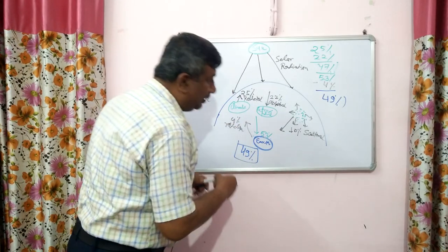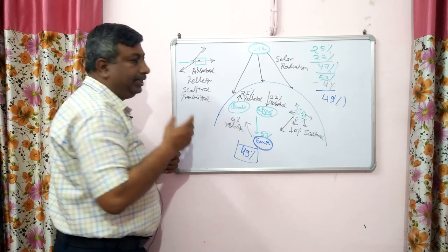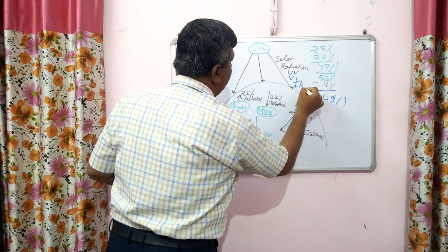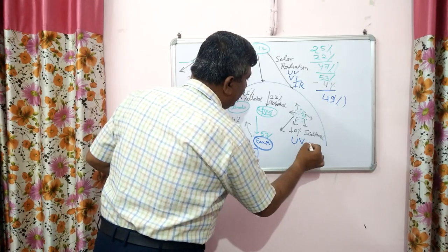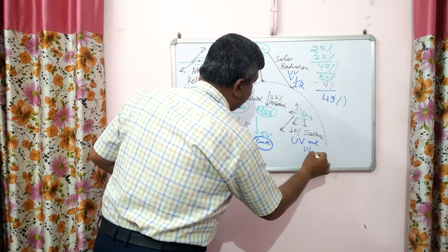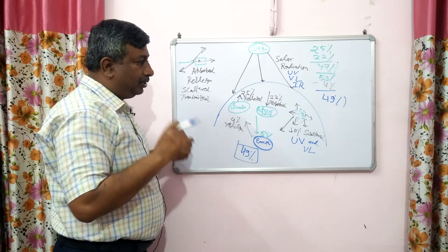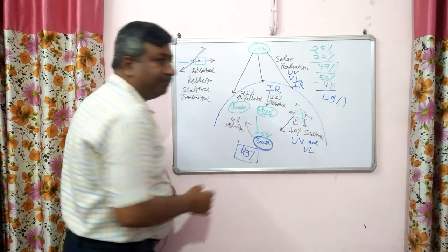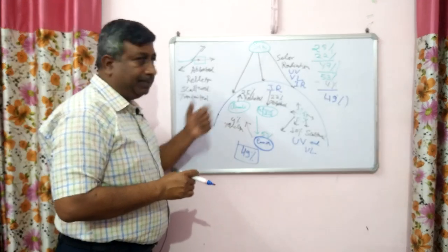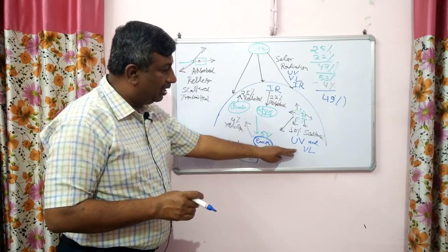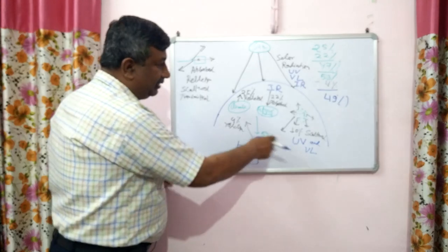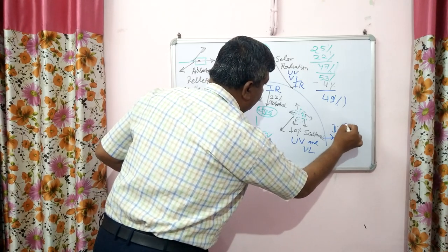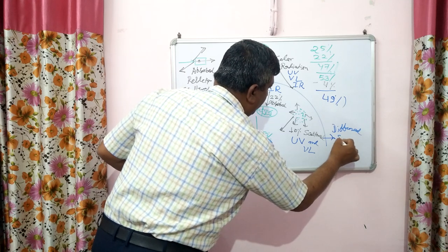Solar radiation consists of UV radiation, visible light, and infrared. Scattering is generally of UV radiation and visible light — smaller wavelength radiation is scattered more — while absorption is mostly of infrared radiation. This scattered radiation is also known as diffuse radiation or sky radiation.